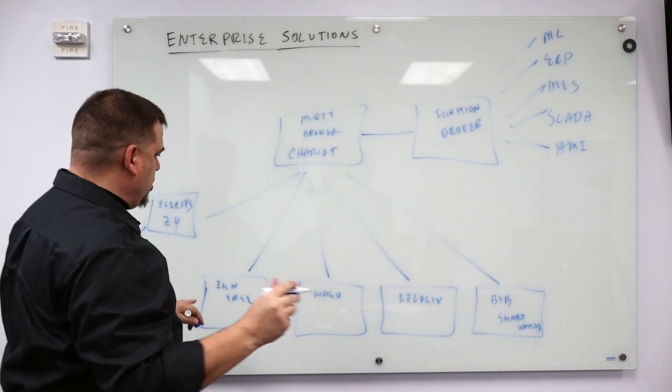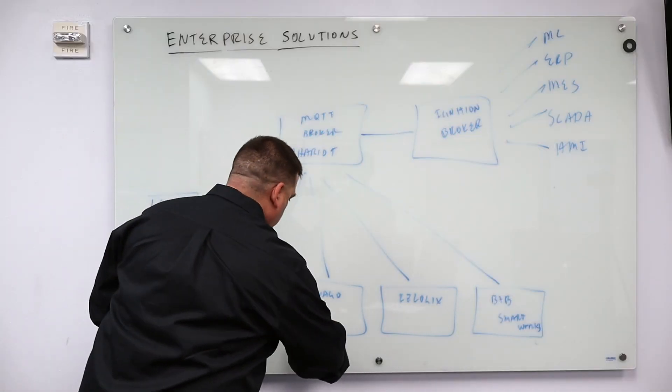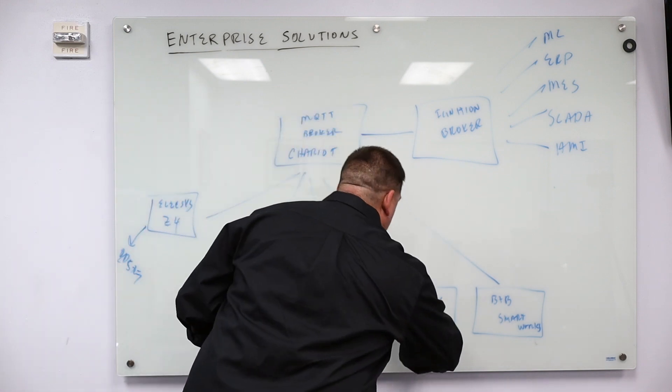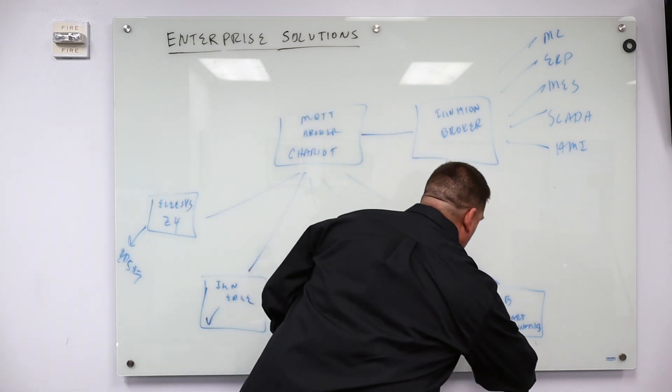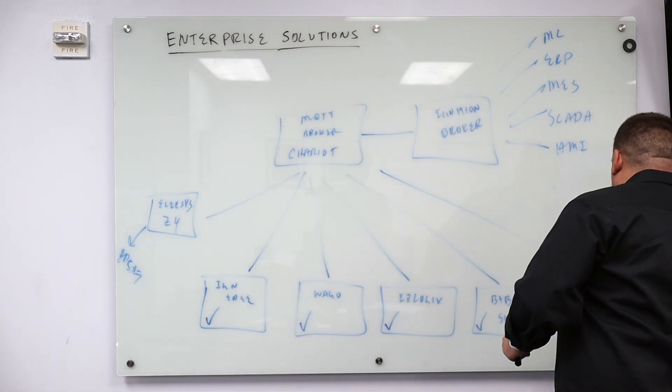We're going to get to this part. We're going to show you how to configure Ignition Edge. We're going to show you how to use WAGO's MQTT library in their CodeAssist package. We're going to show you how to set up EasyLogix. We're going to show you how to use B&B SmartWorks solution. We're going to show you, I felt bad for doing this,